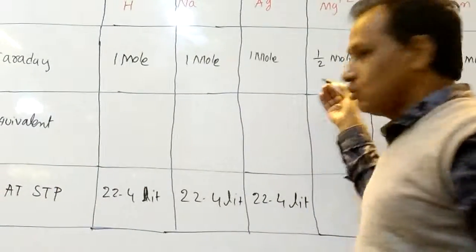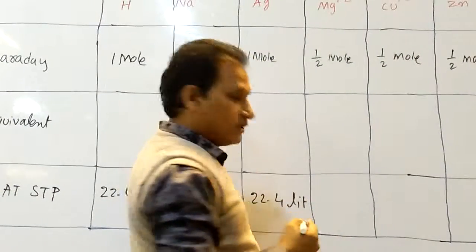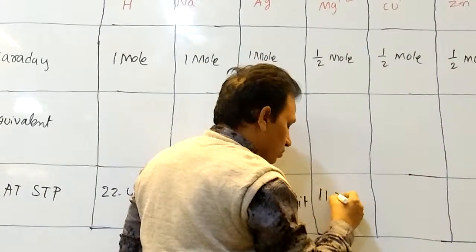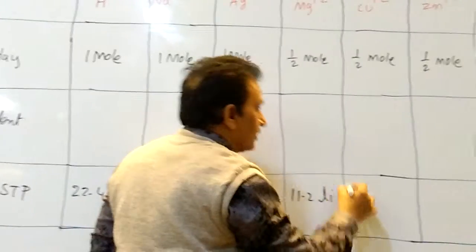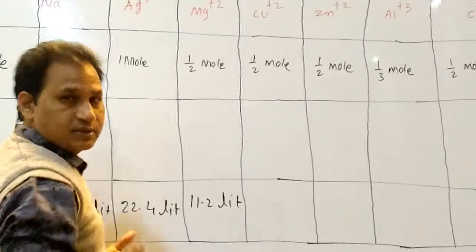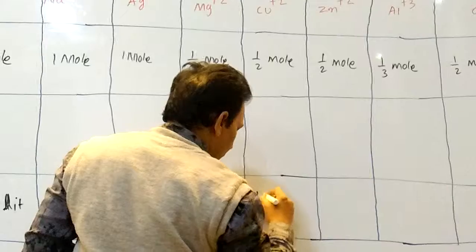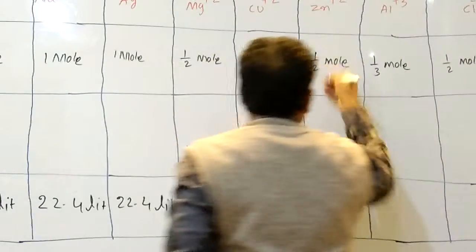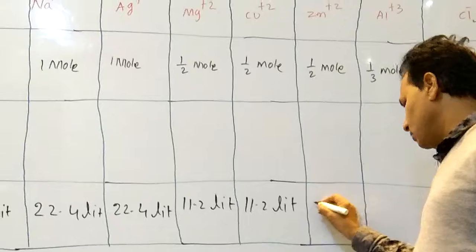Here, one by two mole. One by two means 22.4 by 2, that is 11.2 liters. Here one by two means 22.4 by 2, that is 11.2 liters. Here, one by two means 11.2 liters.